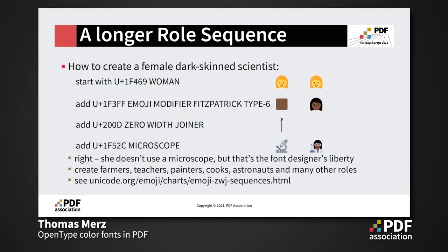Here is a more elaborate example of how to create a scientist with dark skin and gender attached. You start with a woman, add the skin tone, then along with the Zero Width Joiner you add a microscope, and end up with a female scientist.